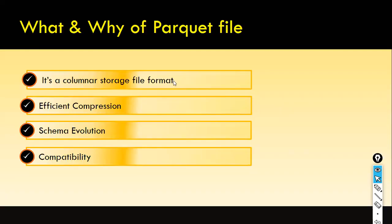Parquet file is a columnar storage file format. You can do compression with it. It supports various compression algorithms to reduce storage requirements and also to improve IO performance. It also offers selective reading — without loading the entire dataset, it selects data from specific columns alone.